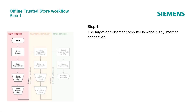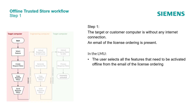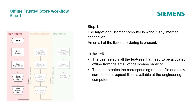In Step 1, the target or customer computer is without any internet connection. An email of the license ordering is present. In the LMU, the user selects all the features that need to be activated offline from the email of the license ordering.